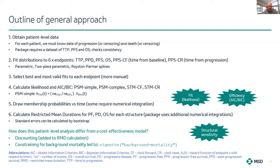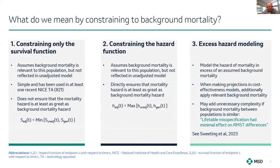We can then also consider constraining extrapolations for background mortality. We don't want our projections of life expectancy in this diseased population to be any greater than background or general life expectancy. Background mortality, perhaps adjusted through an assumed standardized mortality ratio, should constrain those projections.